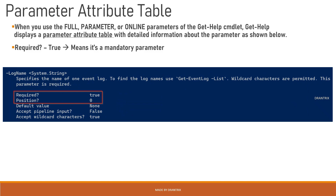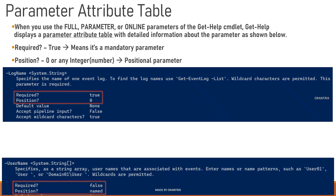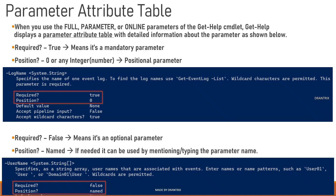In the parameter attribute table, we focus on two fields: Required and Position. If Required is True, the parameter is mandatory. If Position shows a number like 0, the parameter is positional. If you look at the UserName parameter, Required is False — meaning it's optional — and Position shows Named, meaning you must type the parameter name explicitly.